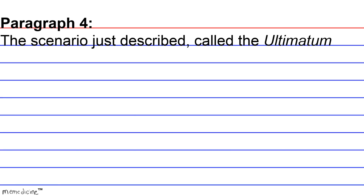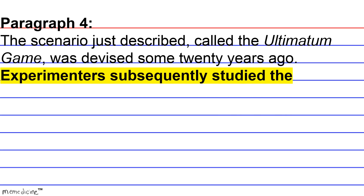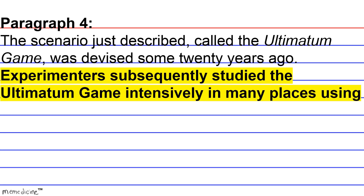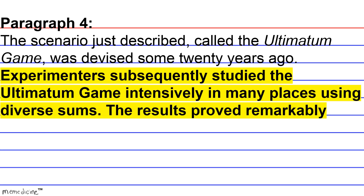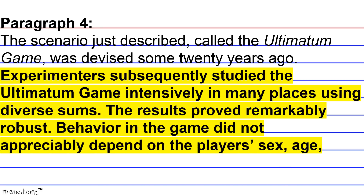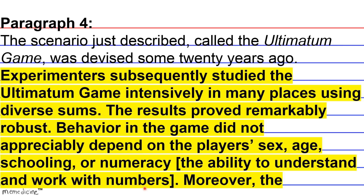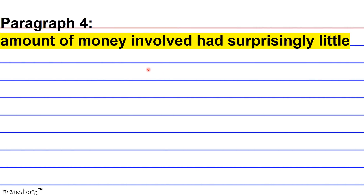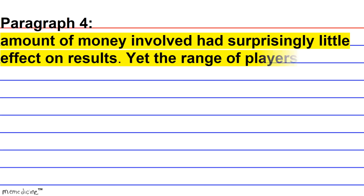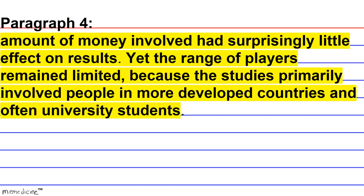The scenario just described, called the ultimatum game, was devised some 20 years ago. Experimenters subsequently studied it intensively in many places using diverse sums, and the results proved remarkably robust. Behavior in the game did not appreciably depend on the player's sex, age, schooling, or numeracy — meaning the ability to understand and work with numbers. Moreover, the amount of money involved had surprisingly little effect on results. Yet the range of players remained limited because the studies primarily involved people in more developed countries and often university students.